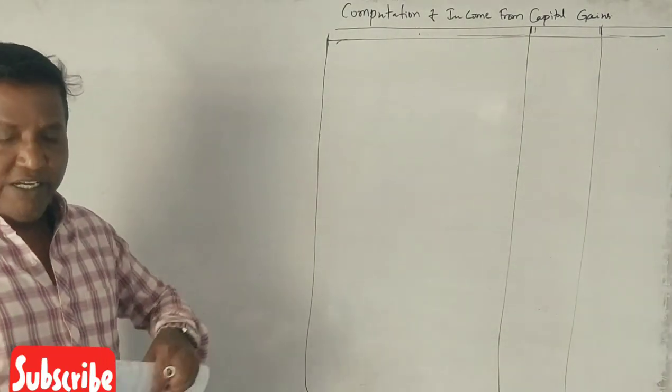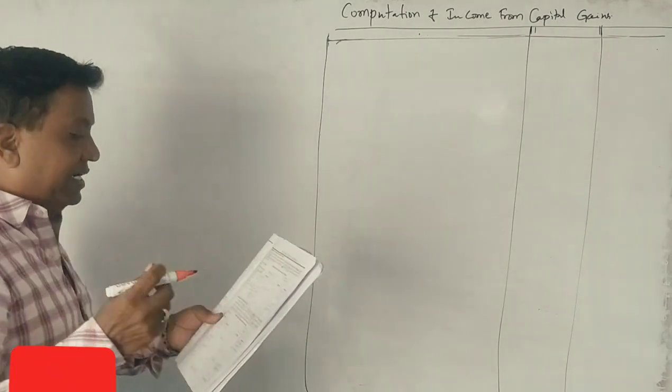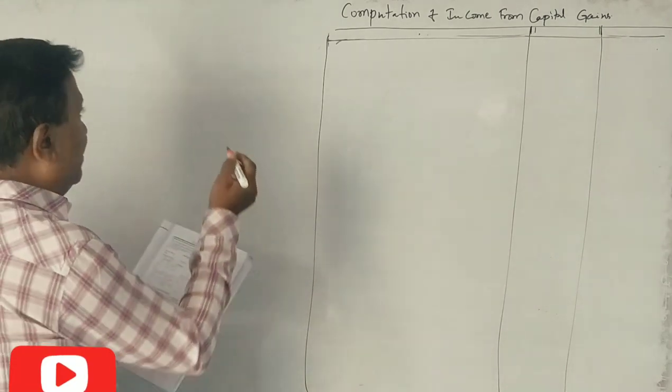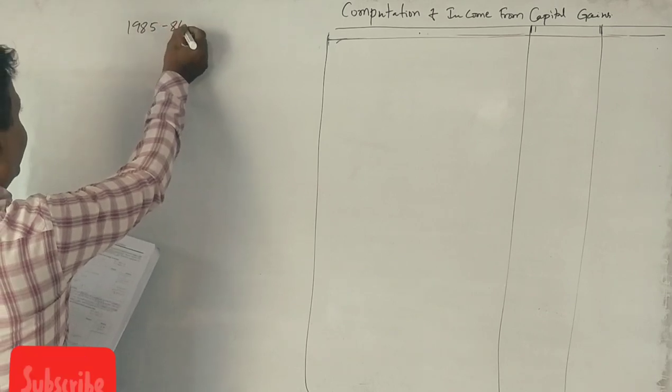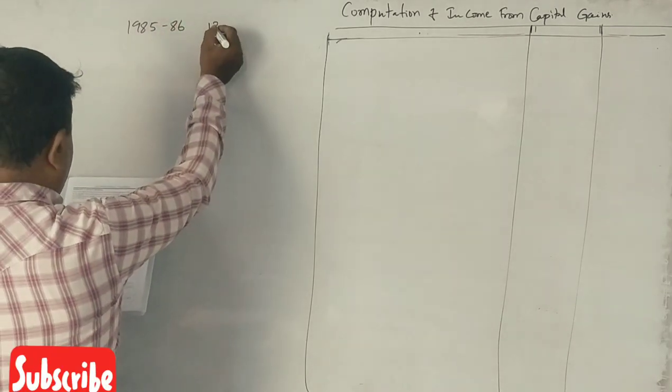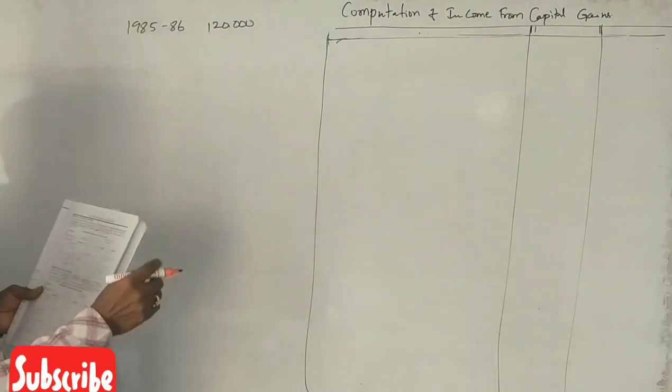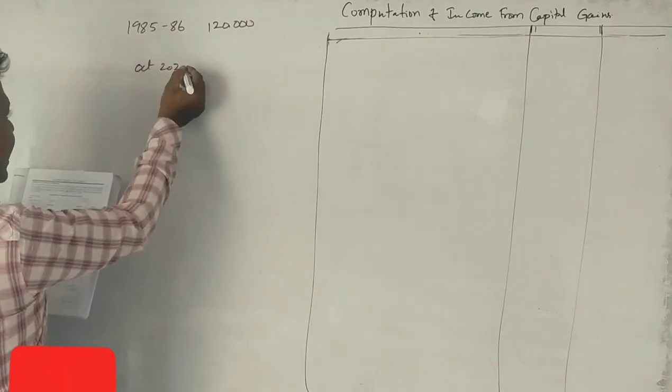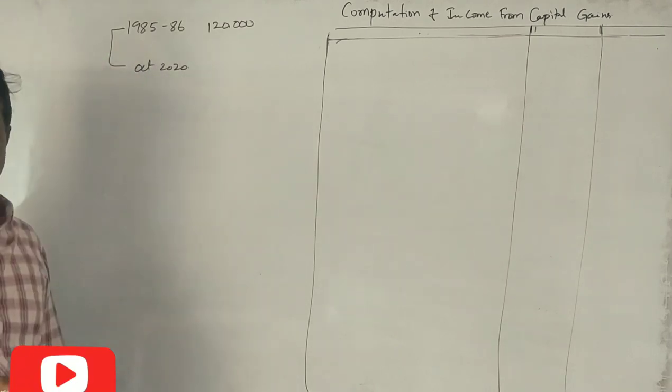This is the purchase and sale of residential house property. Purchase in 1985-86, purchased for Rs. 1,20,000. Sale in October 2020. Is it long term or short term? Long term.